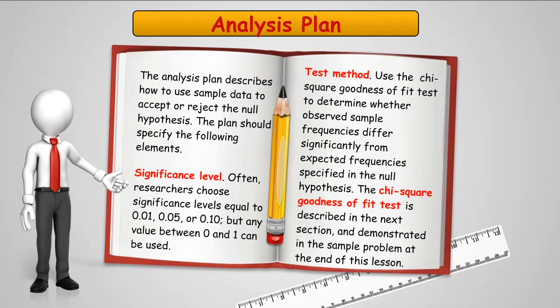For our analysis plan, of course, we need to define the significance level as always. Typically, like we mentioned in every other test we've been doing before, 0.05, 0.01, and 0.1 are some of the most typical values. But you can use any number between 0 and 1. The test method in this case is going to be the chi-square goodness-of-fit test.